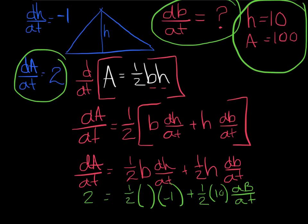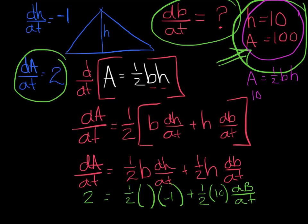If I don't have the base, I can easily go get it — we haven't used the fact that we know the area. So I'll plug 10 and 100 into the area formula: 100 = ½ × base × 10. ½ of 10 is 5; 100 divided by 5 gives a base of 20.